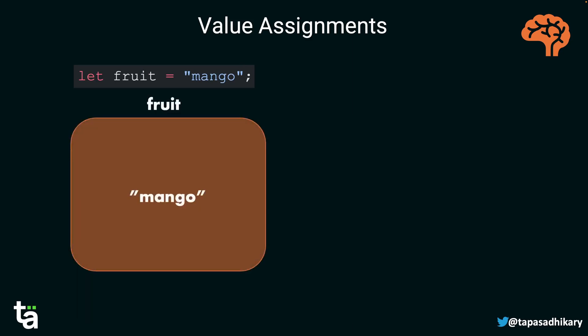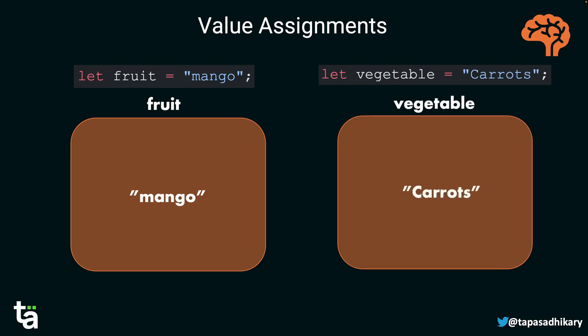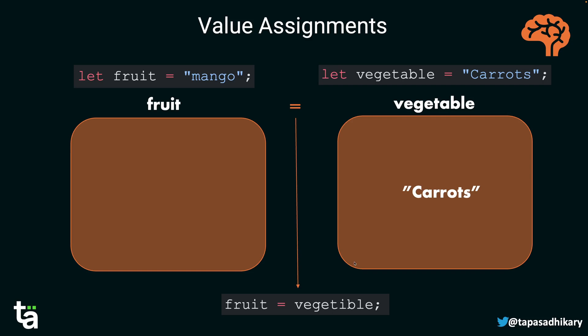Let's take one more example. We have `let fruit = 'mango'` and `let vegetable = 'carrots'`. Now if we write `fruit = vegetable`, the right-hand side's value — which is 'carrots' — gets assigned to the left-hand side storage 'fruit'. The 'vegetable' storage remains intact with 'carrots', but now 'fruit' also holds 'carrots'. So both fruit and vegetable have the same value.